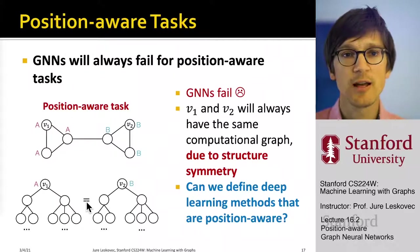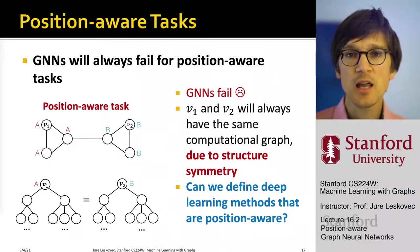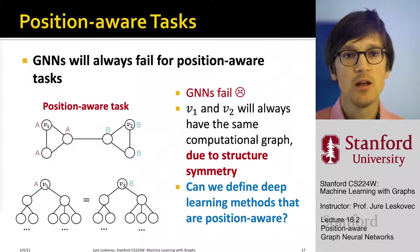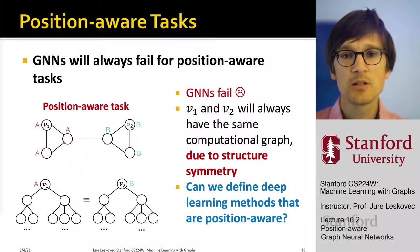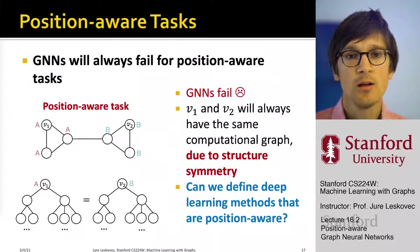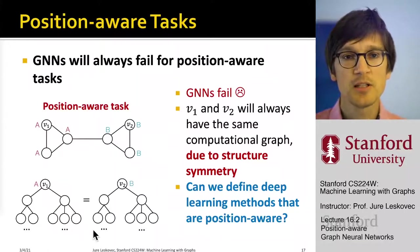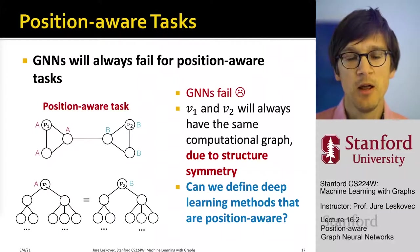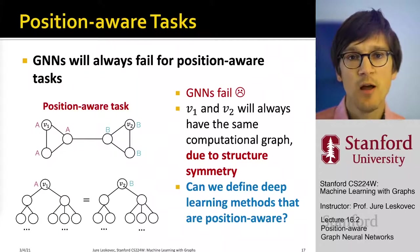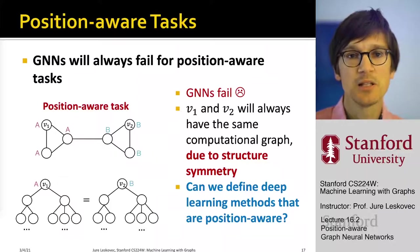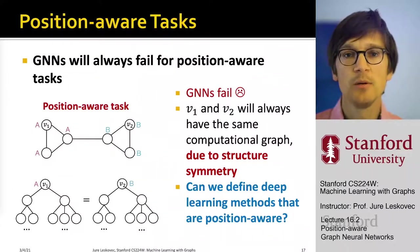In a position-aware task, where we change the labeling of nodes according to communities, a plain GNN is going to fail. Nodes V1 and V2 have the same computation graphs because they are symmetric with each other. And since we assume there is no discriminative node feature information, the two nodes have the same local neighborhood structure and the same computation graph, meaning they will have the same embedding and the classifier will assign them the same label — but we want them labeled differently.